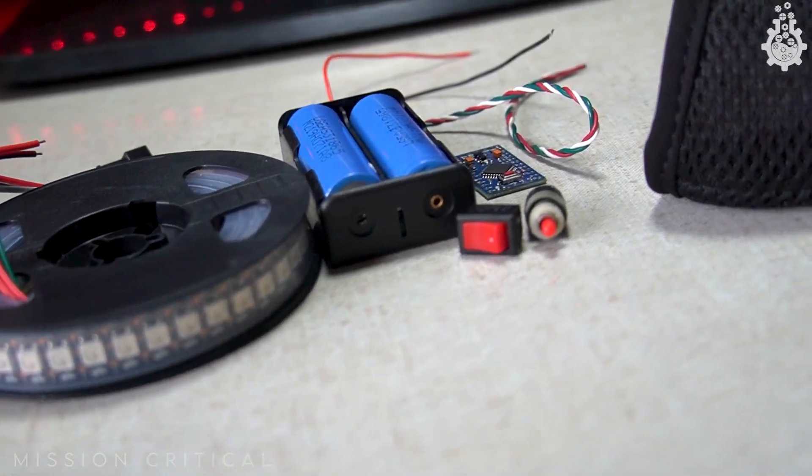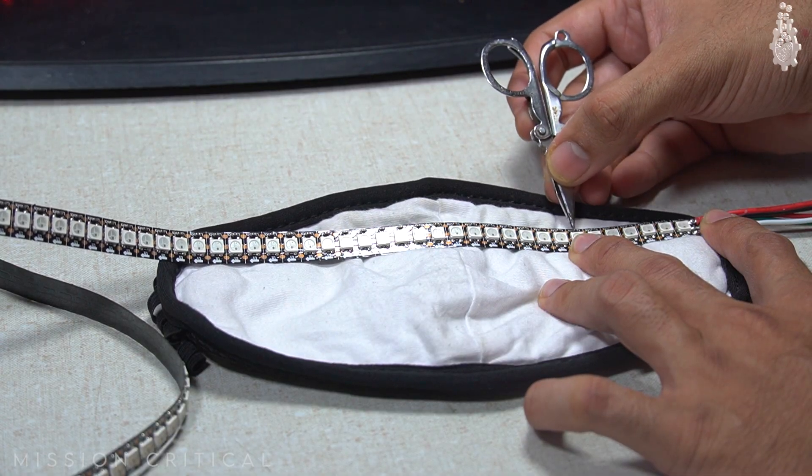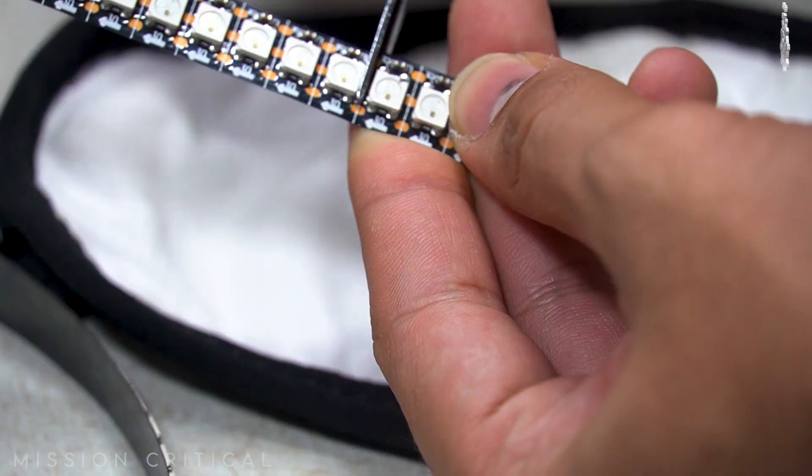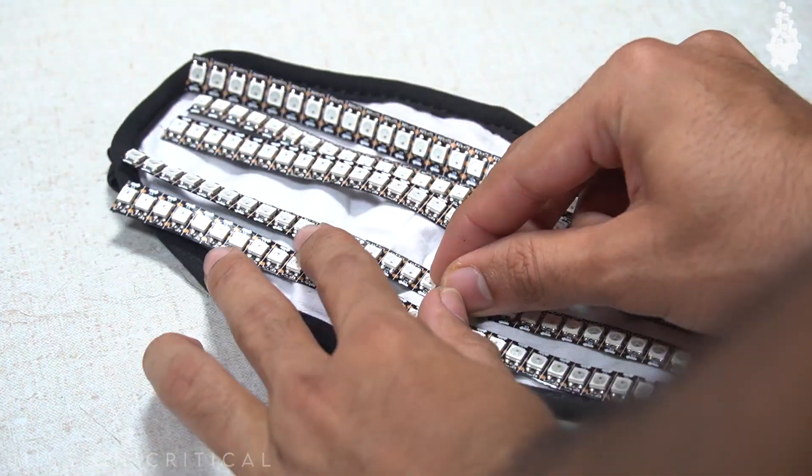Link to all the required parts and tools can be found in description. We will start this process by first measuring the length of LED required to cover the entire mask and cut few strips of them. I have used five strips in total.